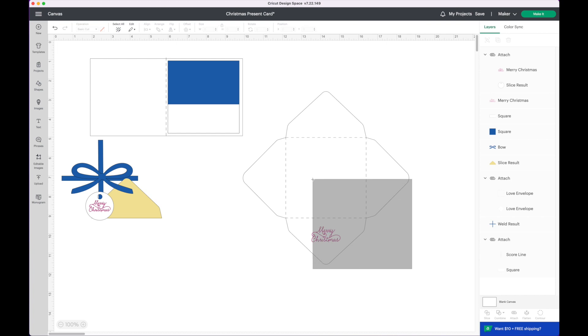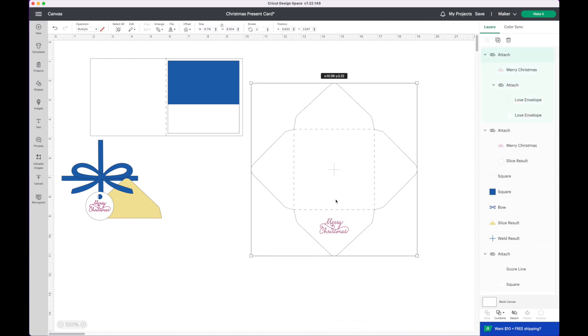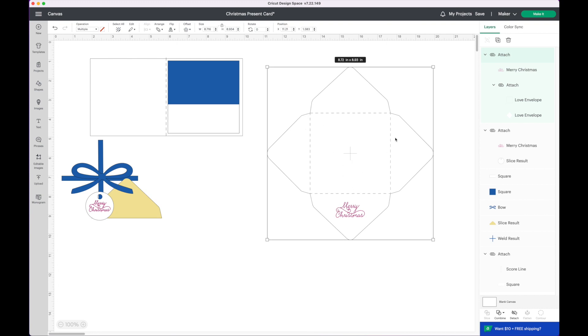I'm going to highlight both of those pieces. Right click on that and then choose attach. So this is going to score my cardstock, it's going to cut my cardstock and it's also going to draw with the pen the Merry Christmas there. So now this piece here because it's eight by four we can use our trimmer to cut that piece out. So I'll delete that piece.